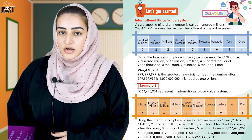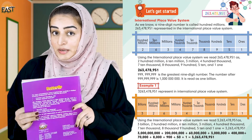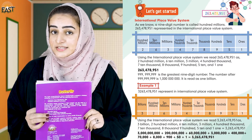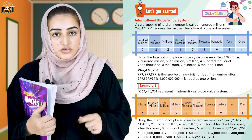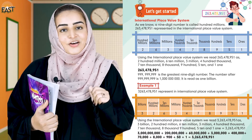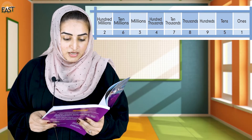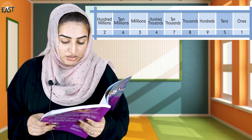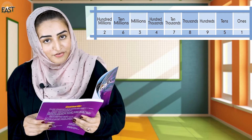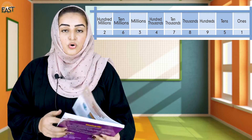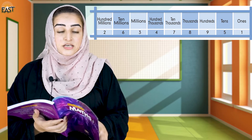We will follow page two, which has lots of big numbers — but they are not difficult. If you know the international place value system, it will be very easy to read and remember all these place values. Our first number has the digits: 2, 6, 3, 4, 7, 8, 9, 5, 1. We put all these into place values — always remember, we read from the right side and write from the left side.